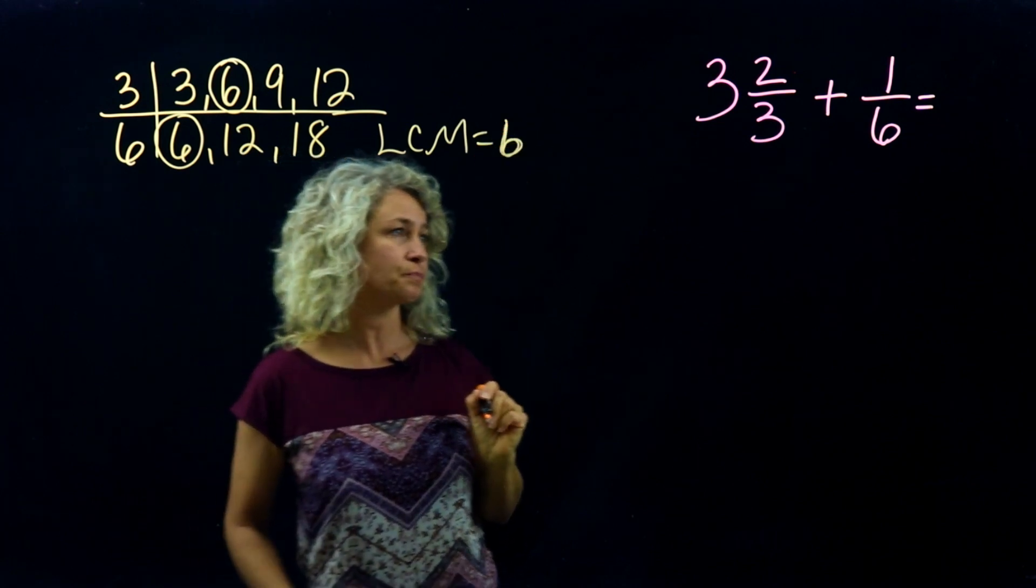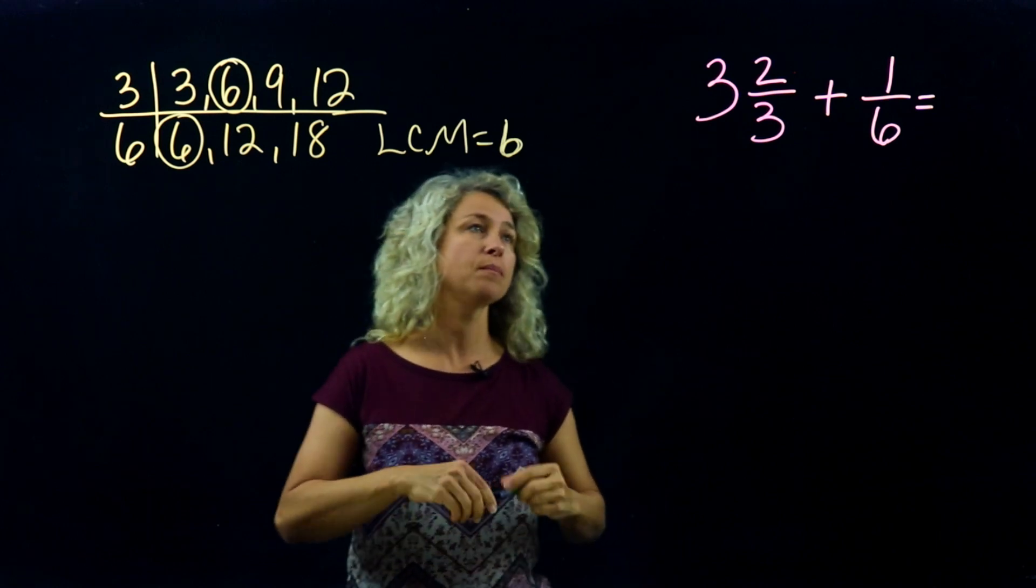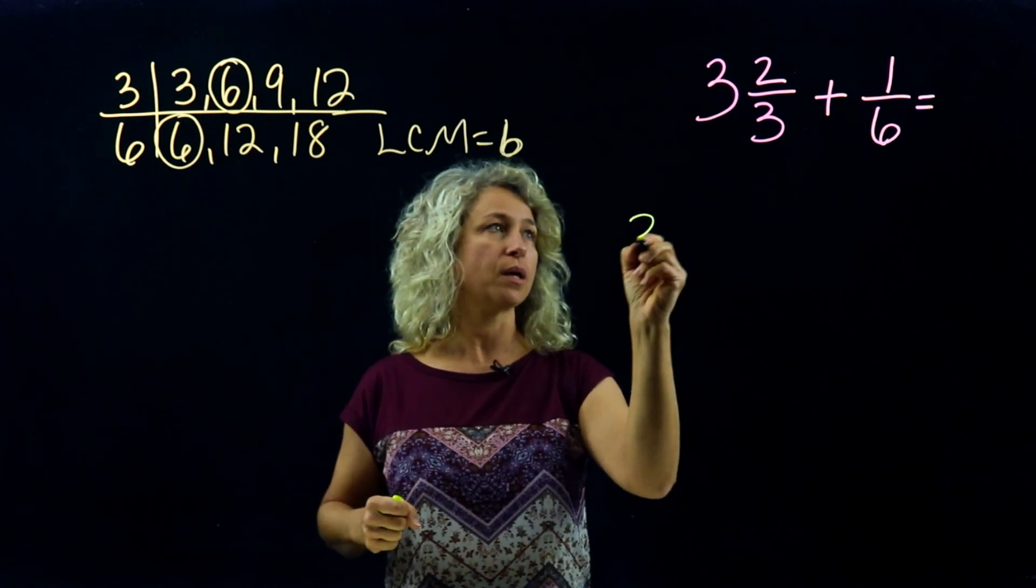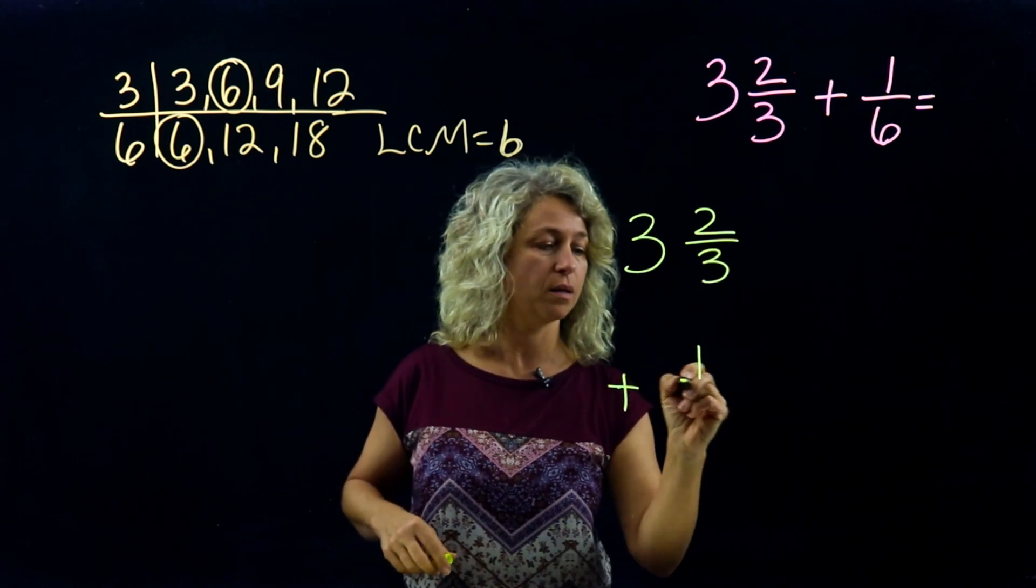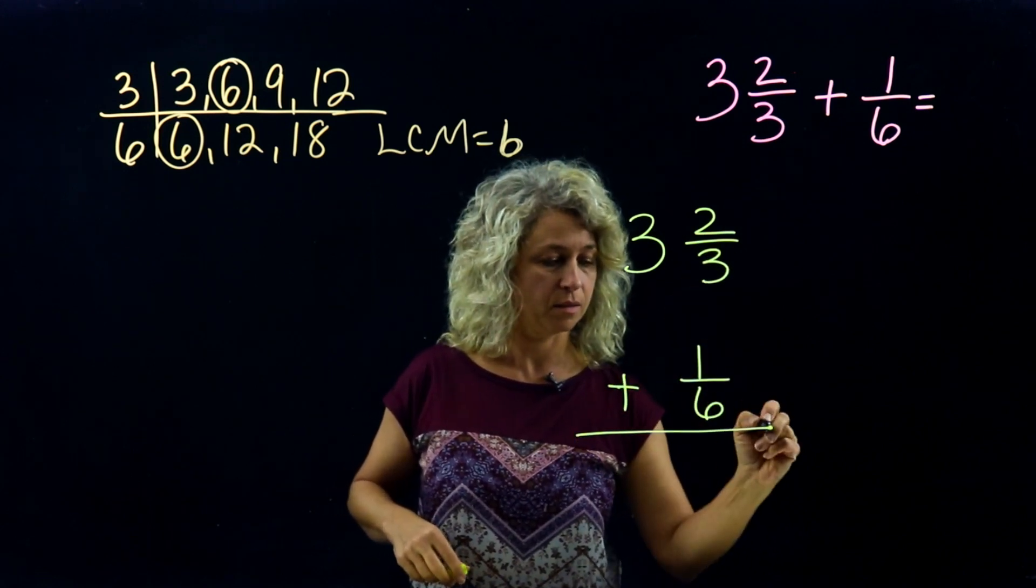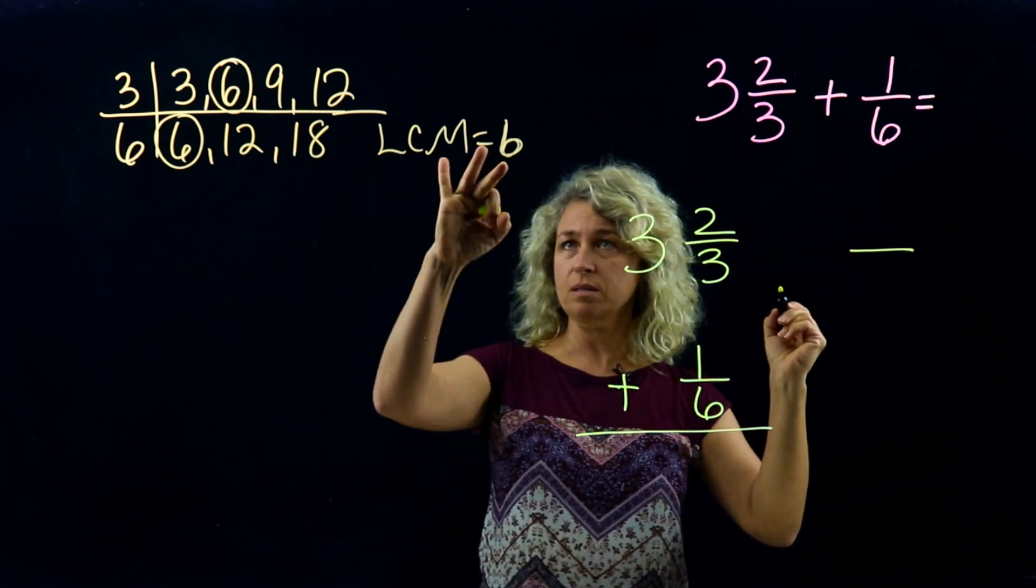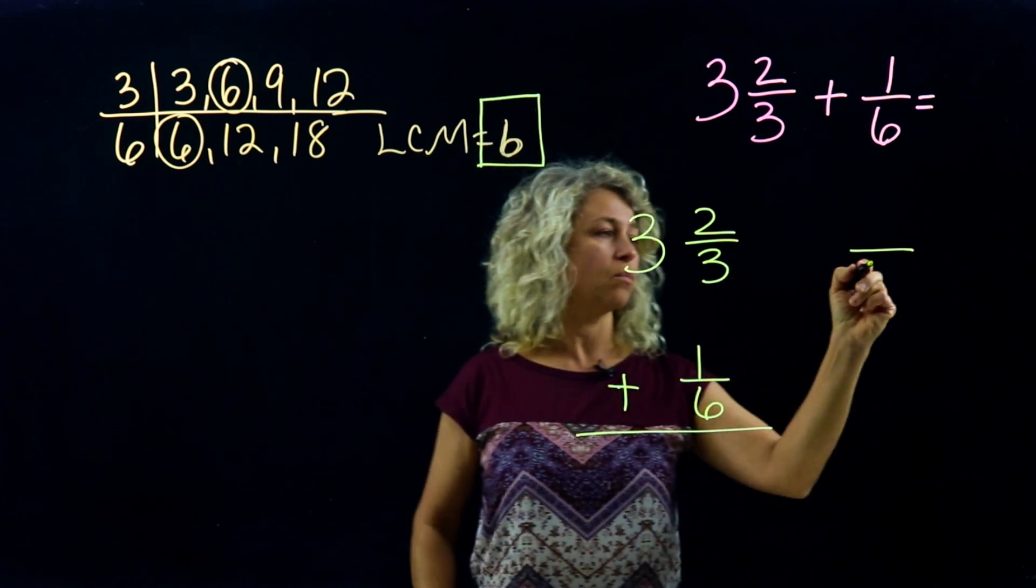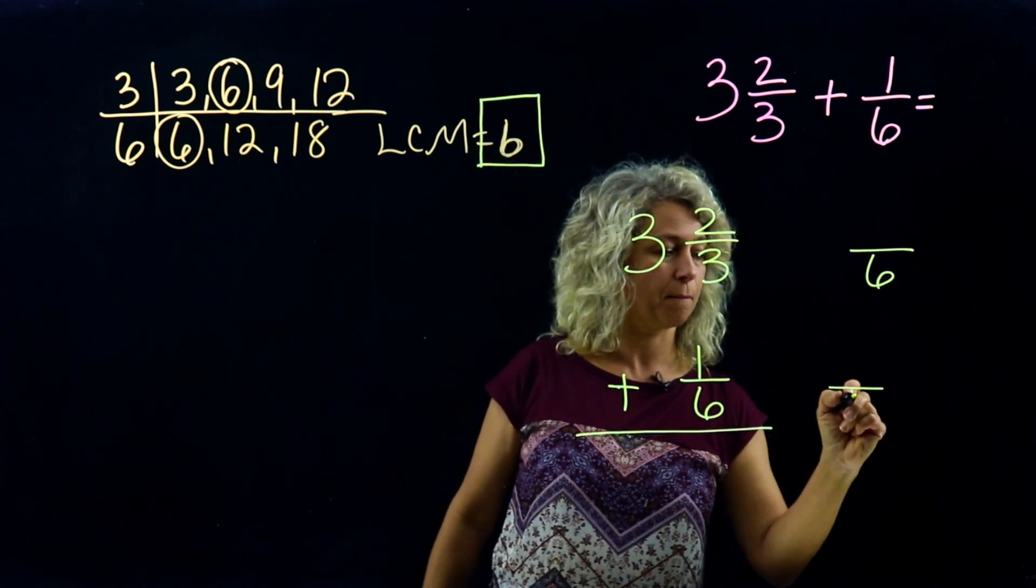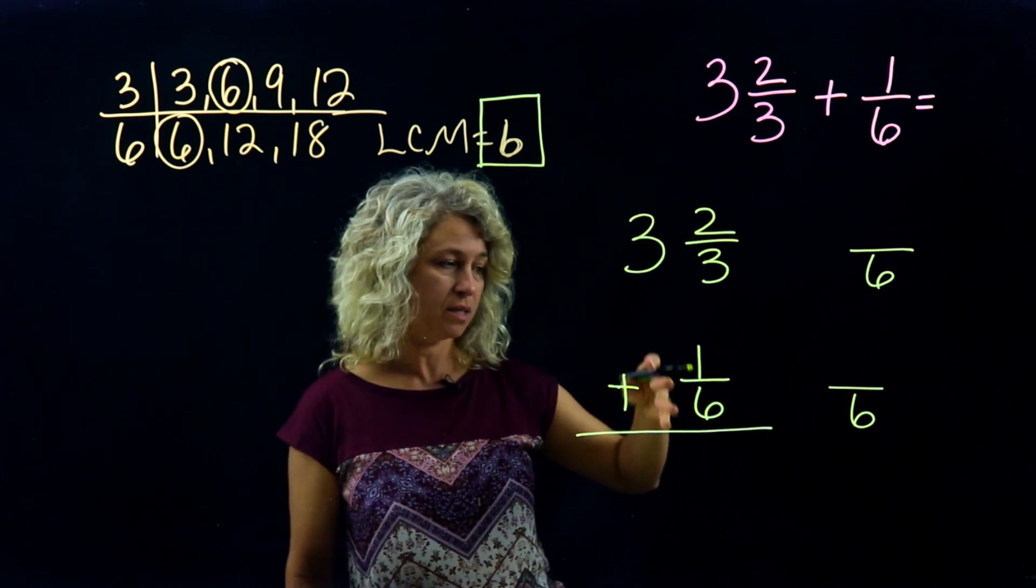Alright, now let's rewrite the problem. 3 and 2/3 plus 1/6. And we'll make our denominator the same. We want our denominator to be the LCM, which is 6. Notice the 6 is already a 6, right? So we can just say times 1, times 1, times 1, and bring over the 1, and we're finished with this section.